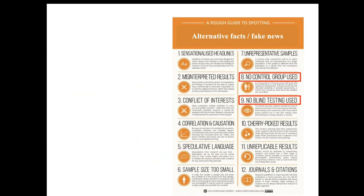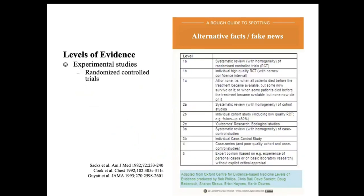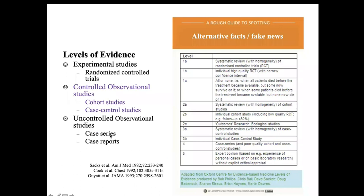Lack of blinding or lack of a control group is highlighted here. Lack of a control group is captured where we highlight that case series without a control group are at the bottom of the hierarchy of evidence, and randomization is at the top. In between are non-randomized studies where control groups exist. When making selection criteria for step two in a systematic review, we could state that we will only include studies with a randomized design, or only studies with a control group, and exclude case series.